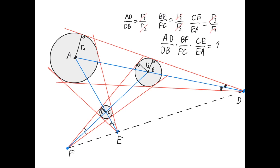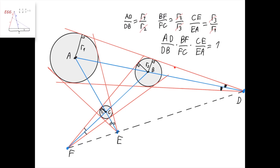And hence, we get that AD divided by DB times BF divided by FC times CE divided by EA equals 1. But this is exactly the statement we get from Menelaus' theorem applied for triangle ABC, and the points D, E, and F, each one lying on one of the sides, or the extension of one of the sides, of the triangle. And therefore, F, E, and D lie on a straight line by Menelaus' theorem, since this equality holds.